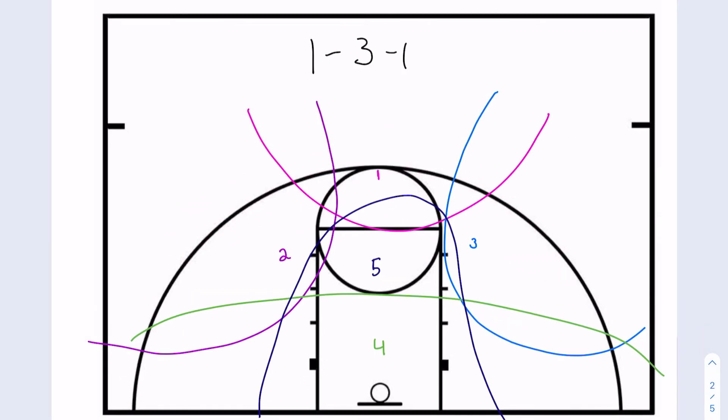The third zone is a 1-3-1. So you have a person at the top, then three in a row, and then one person on the bottom. This guard on the top is covering everything up near the top of the key. They can go all the way up to like half court, and they're really covering that point guard.